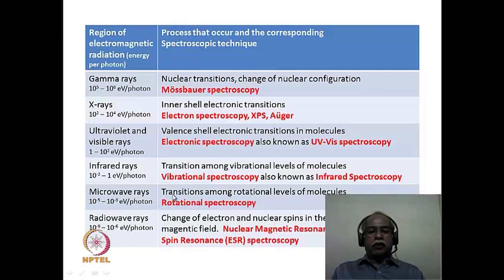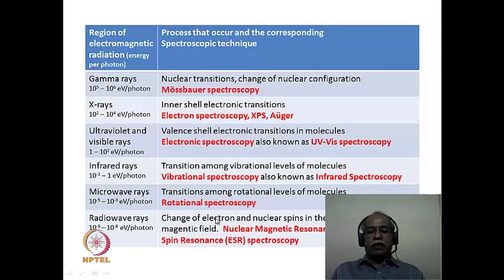In the case of microwaves, which are very low energy radiation, transitions among the rotational levels of a molecule occur upon absorption — this constitutes rotational spectroscopy. For the radio wave frequency region, we are talking about changes in the nuclear or electron spin in the presence of an external magnetic field. In the presence of an external magnetic field, nuclear spins and electron spins have different energies — ground state and excited state — and the transition from ground state to excited state is what is observed during electron and nuclear spin resonance spectroscopy.